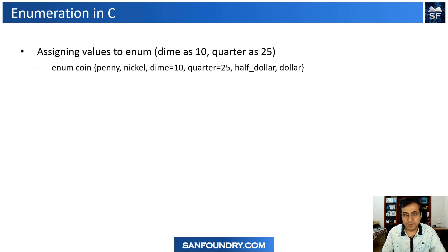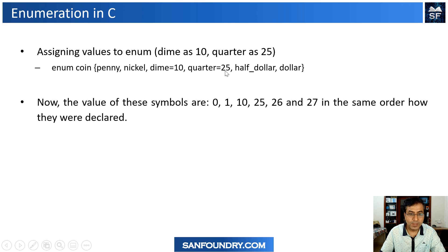How do we assign values to this enum? As I mentioned, by default the first integer constant will have a value of zero. The next one is previous value plus one. We can also explicitly assign the values if we wanted. Whenever we do that, the next value is always previous value plus one. When you do like this, you will see that penny is zero, nickel is one, dime we have hard coded to 10, quarter we have hard coded to 25, half dollar will be 26, and dollar becomes 27. So the values of these integer constants are in the same order how they were declared.